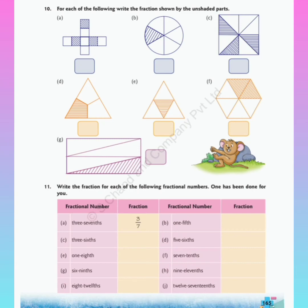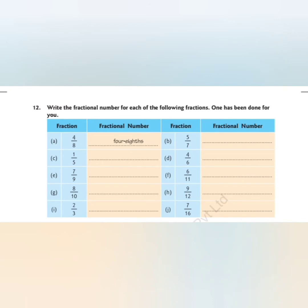In question number 11, a fractional number is given and you have to write the fraction. It is very easy — the first part of the fractional number is the numerator and the second part is the denominator. Question 12 is just the opposite — you have to write the fractional number from the fraction. The numerator is written as is, and for the denominator we write the ordinal spelling.